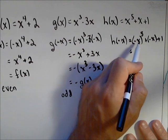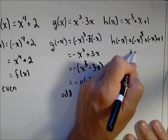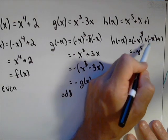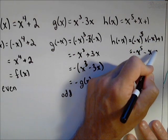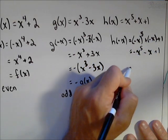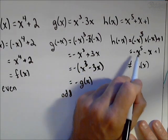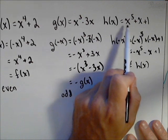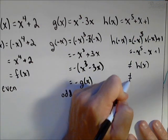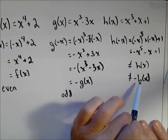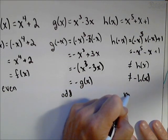The odd exponent means negative x raised to the fifth will still be a negative x to the fifth, plus a negative x, so minus x, plus one. Now, clearly, this is not equal to h of x. Only two of the signs switch, not all three, so it's also not equal to negative h of x. So it's not even, it's not odd, therefore, it's neither.